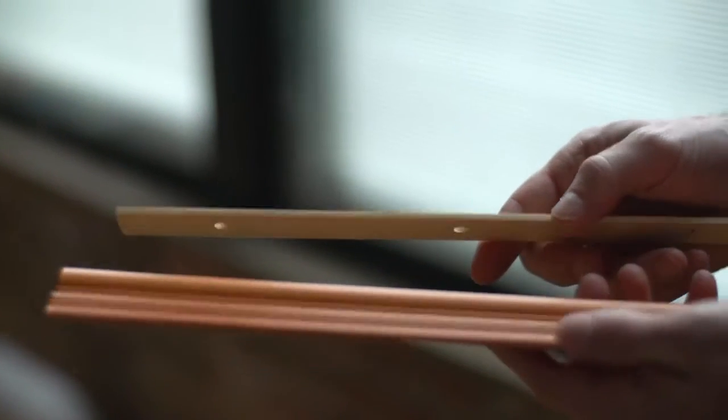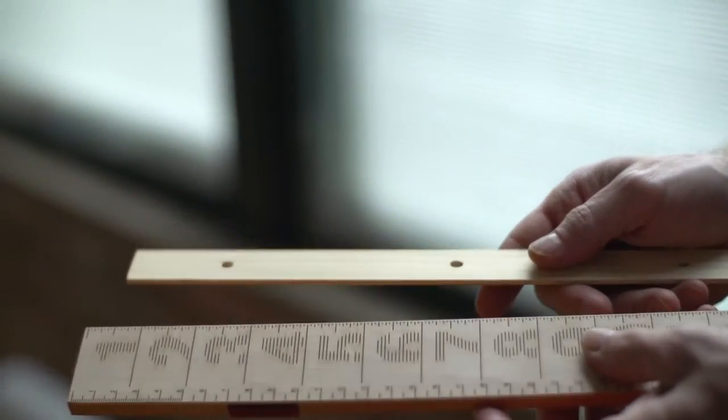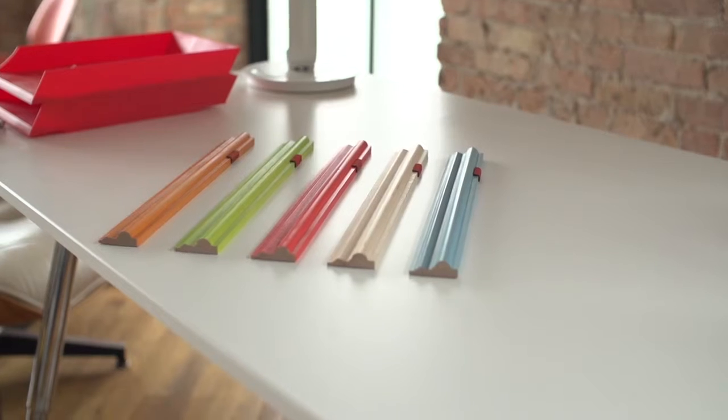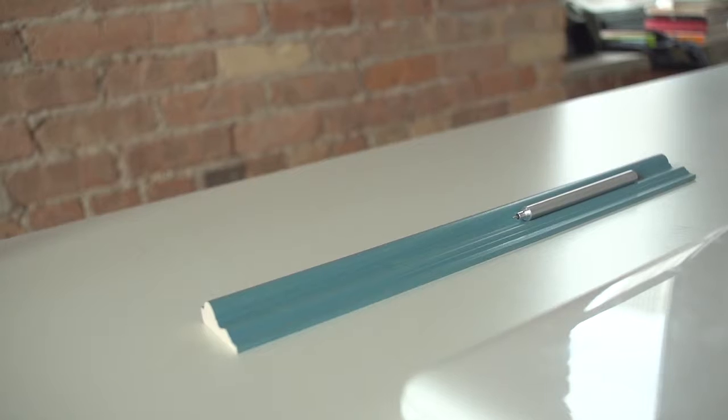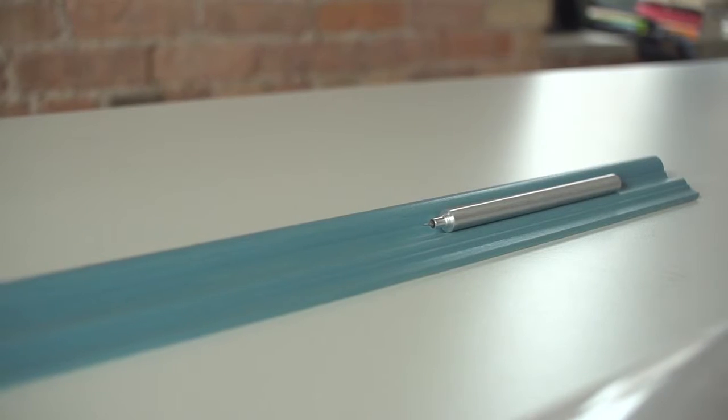Typically, ruler markings are on the top, and there's a blank underside. But we've literally and figuratively turned the standard ruler on its head. We've concealed the numbering beneath an aesthetic top, that also serves as a pen tray for a favorite writing instrument.